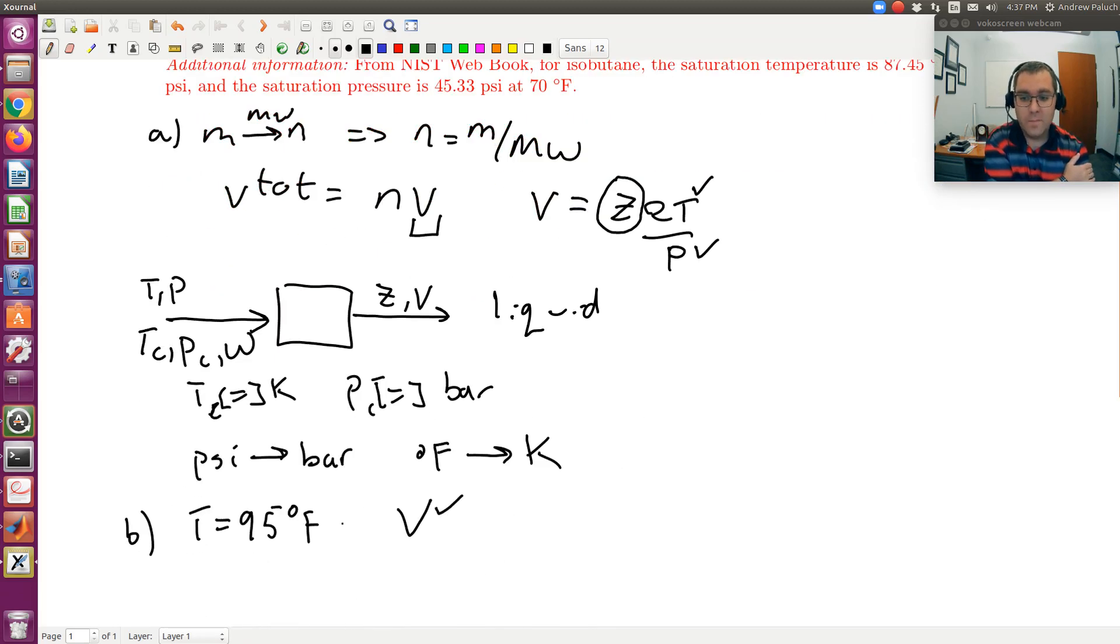So now the first question is always, can I solve this problem? If I have a single component, single phase system, I have two degrees of freedom. So I have two intensive variables here that are known, T and V. So first, yes, the problem is solvable. So now how do I solve for P? Well, you kind of have two ways.